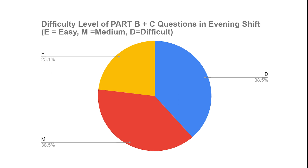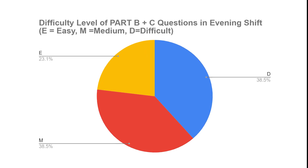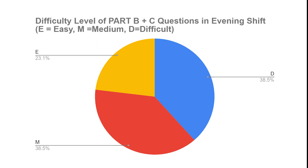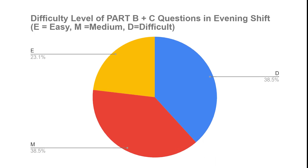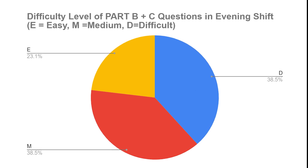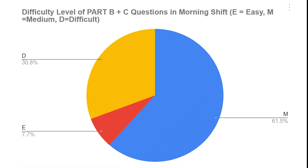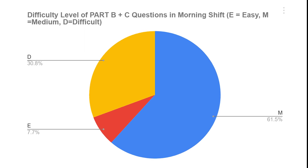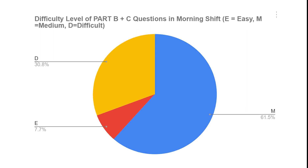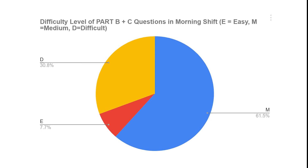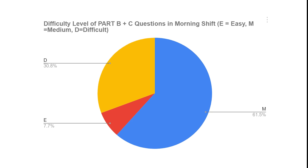Overall, for the evening shift: 23 percent of the paper was easy, 38 percent was difficult, and 38 percent was moderate. For the morning shift: 61 percent was moderate, 7.7 percent was easy, and 30 percent was difficult. So the evening paper was definitely more difficult than the morning paper. We have also compiled a unit-wise graph with a lot of additional analysis.